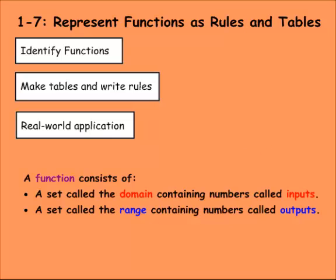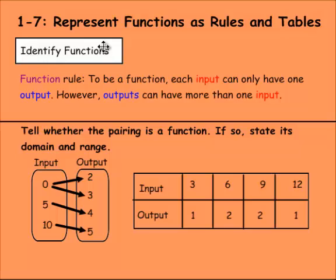We're going to identify functions here. In order to be a function, it has to follow this rule. To be a function, each input can only have one output. However, outputs can have more than one input. So we need to follow this first rule here: each input can only have one output.